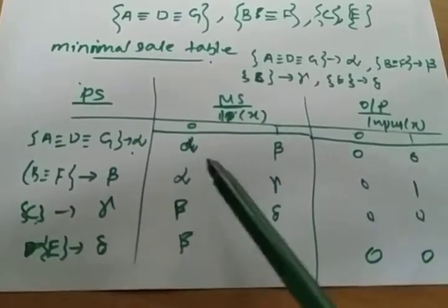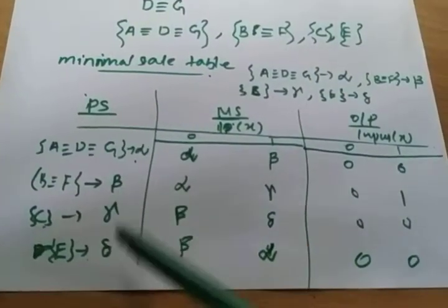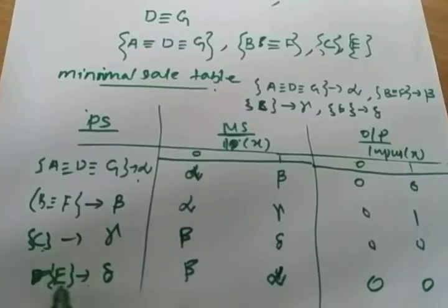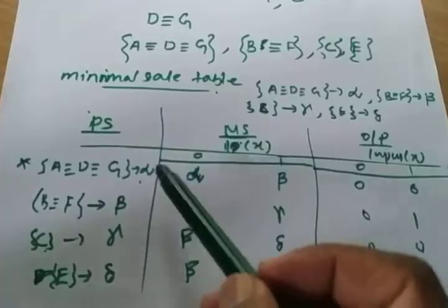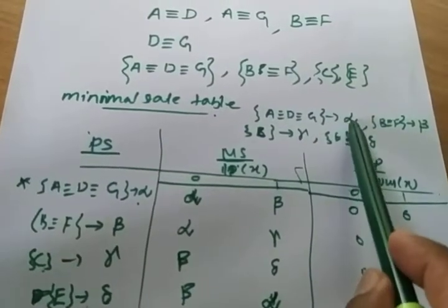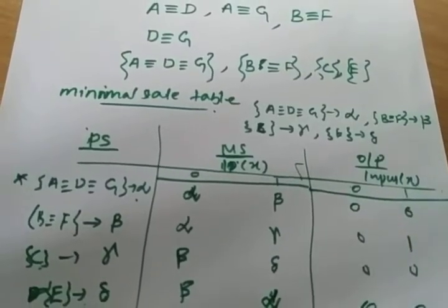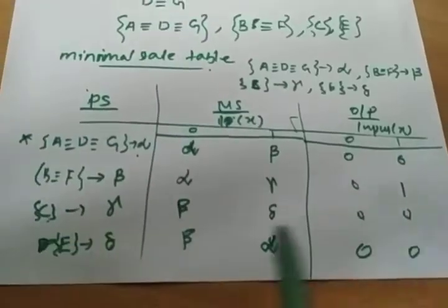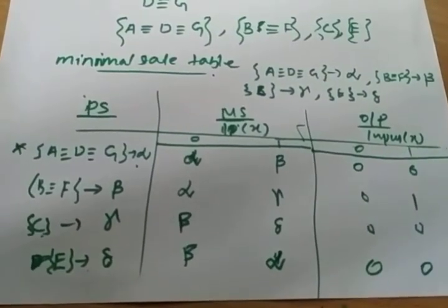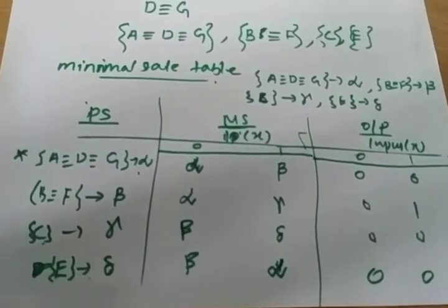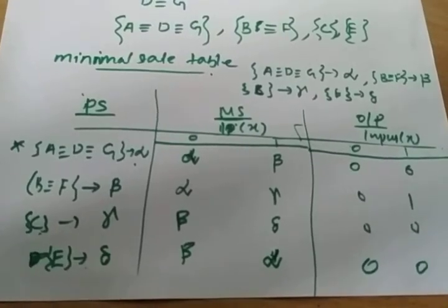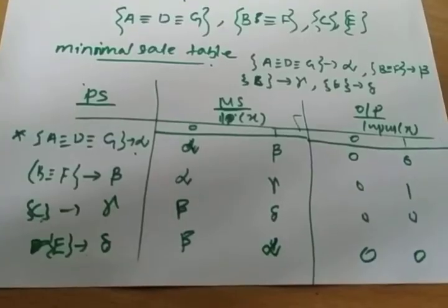Initially there were 7 states; in the minimum state table they are reduced to only 4 states — alpha, beta, gamma, delta — instead of A, B, C, D. You can use any notation such as small letters a, b, c, d or P, Q, R, S, as long as you define them. Reducing 7 states to 4 states reduces transitions, making the circuit simpler and less costly to design.